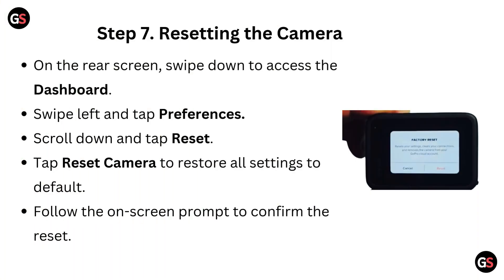Step 7, resetting the camera. On the rear screen, swipe down to access the dashboard. Swipe left and tap Preferences. Scroll down and tap Reset. Tap Reset Camera to restore all settings to default. Follow the on-screen prompts to confirm the reset.